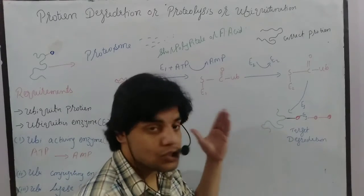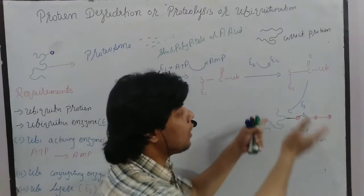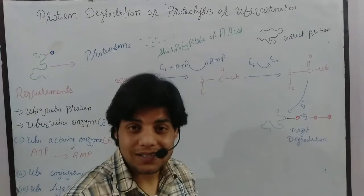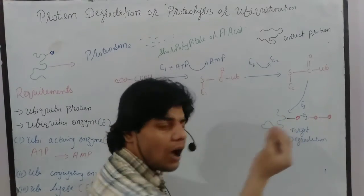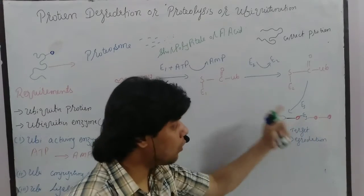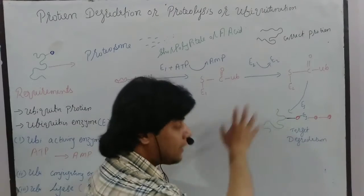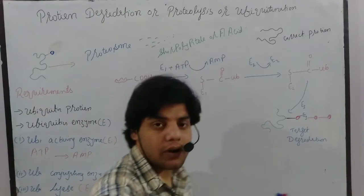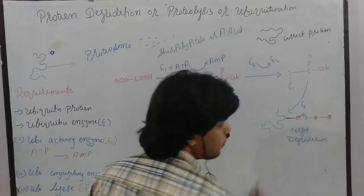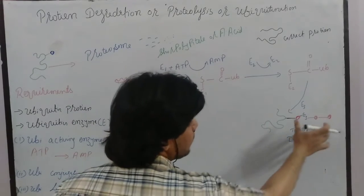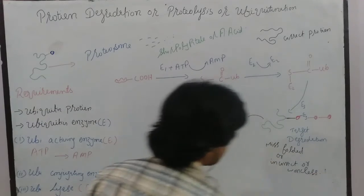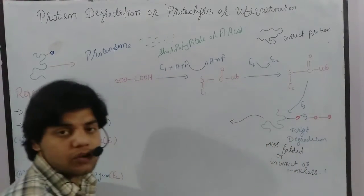The number of ubiquitin proteins attached depends on the protein structure. If the protein is large or has a high molecular weight, many ubiquitin proteins will attach. If the protein is small or has low molecular weight, fewer — perhaps just one — ubiquitin will attach. In this example, the protein is relatively large, so three ubiquitin proteins are attached, and they carry the misfolded, non-functional protein toward the proteasome.